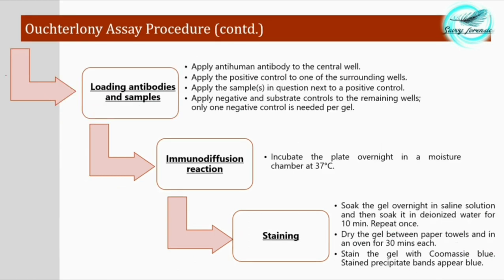After solidification, punch wells in the gel — the number depends on your samples. Apply anti-human antibody in the central well. Apply the positive control to one of the surrounding wells, the sample in question next to the positive control, and negative as well as substrate controls in the remaining wells.